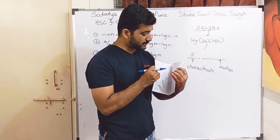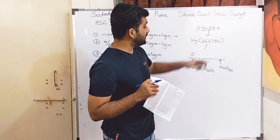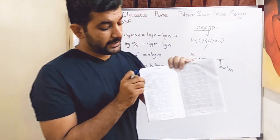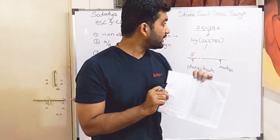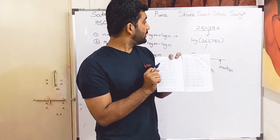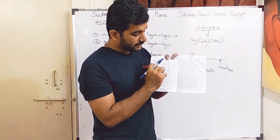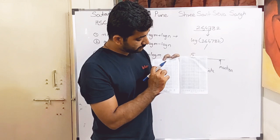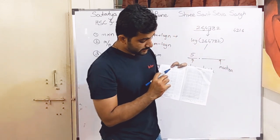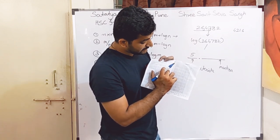Then we use our log book. In the log book we have the logarithm part and the antilog part. In the logarithm table, the first column starts from 10, 11, 12, 13, 14 — two-digit numbers. That is why we selected the two-digit number 26 here. In the row of 26, we look at the fourth column and get the value 4216. Then in front of row 26, we see the value of column 7 in the mean difference, which is 12.